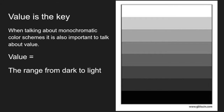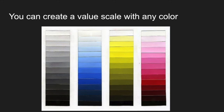Before we start talking about the color schemes, I want to reintroduce the term value. Value is key when talking about monochromatic color schemes. Value is the shade range from the lightest light to the darkest dark and all those little gray bits in between. You can create a value scale with literally any color — every color you can make darker or lighter and have a wide variety of lights and darks of the same color.